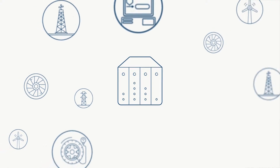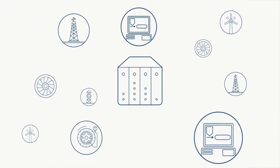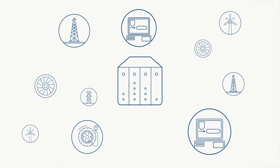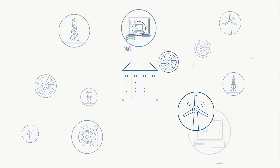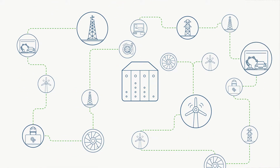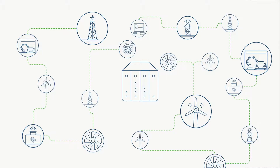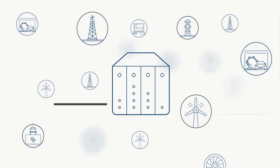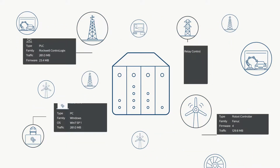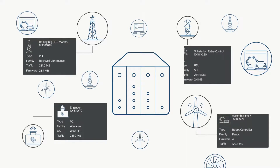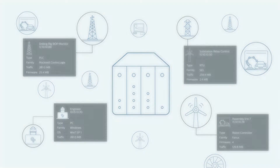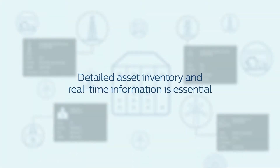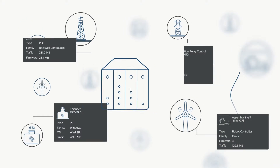Industrial control systems are no longer isolated or static. Connected to the enterprise, they become vulnerable to external attacks and insider threats. To protect the integrity of your ICS, detailed asset inventory and real-time information are essential.